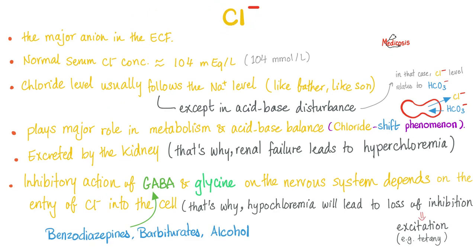Chloride, not chlorine, is the major anion in the extracellular fluid. Normal serum chloride is around 104 millimole per liter. Chloride level usually follows sodium - like father, like son. Do we have some exceptions? Yes, we do have some exceptions in acid-base disturbances. In which case, chloride is usually related not to sodium, but to bicarbonate. If you studied your physiology carefully, you will recall the chloride shift phenomenon, in which chloride goes against not sodium, but bicarbonate. Bicarbonate in, chloride out, and vice versa. Negative for negative - hashtag electroneutrality.